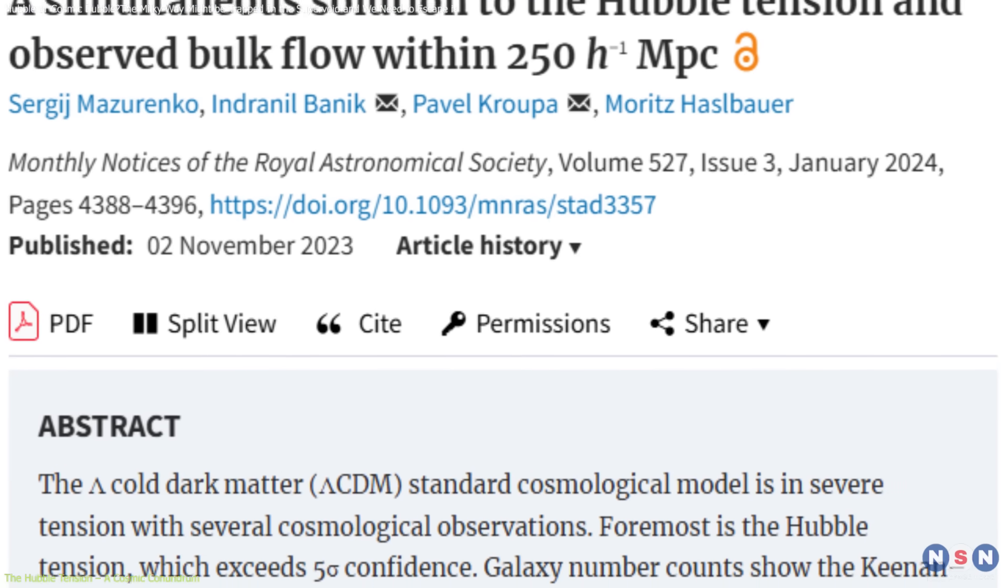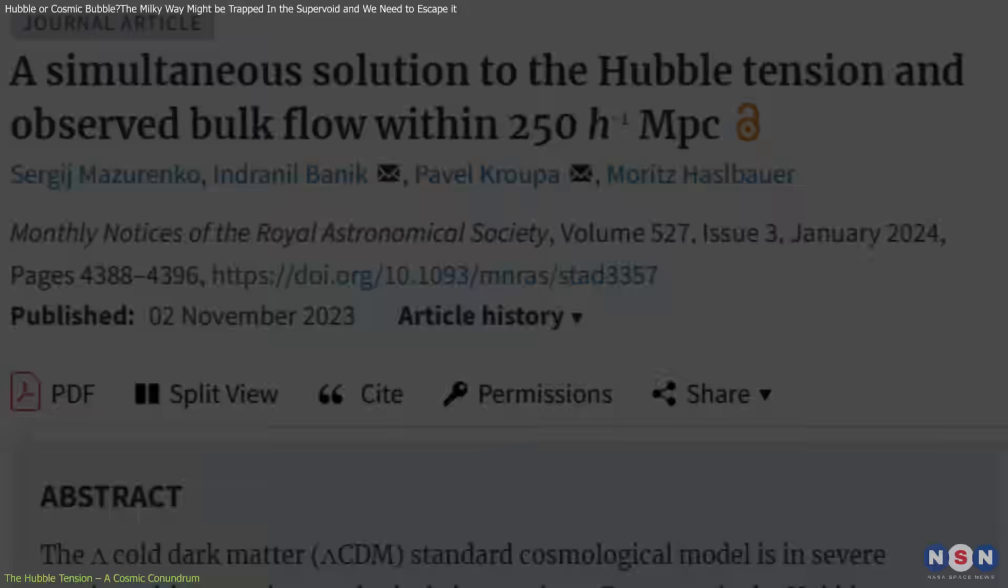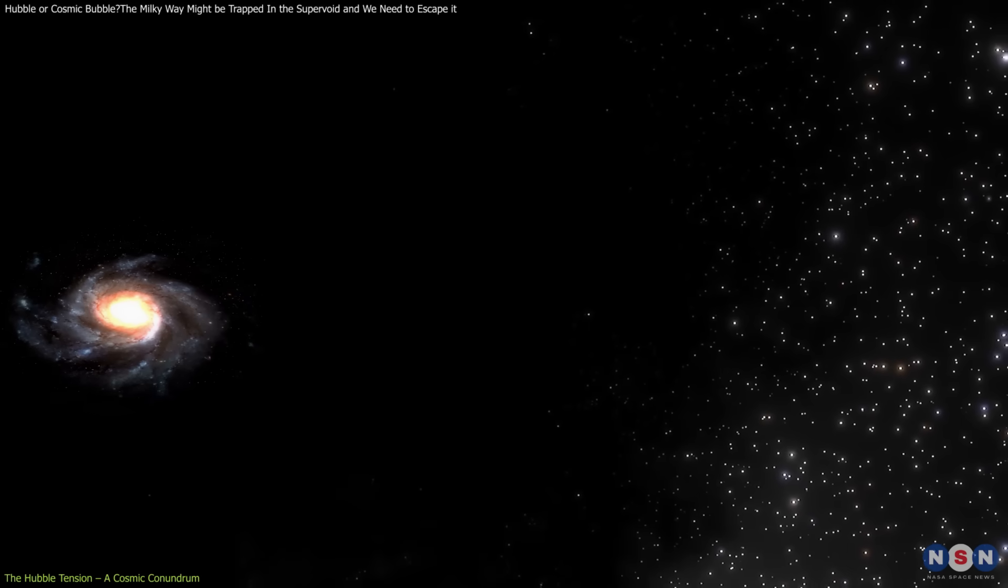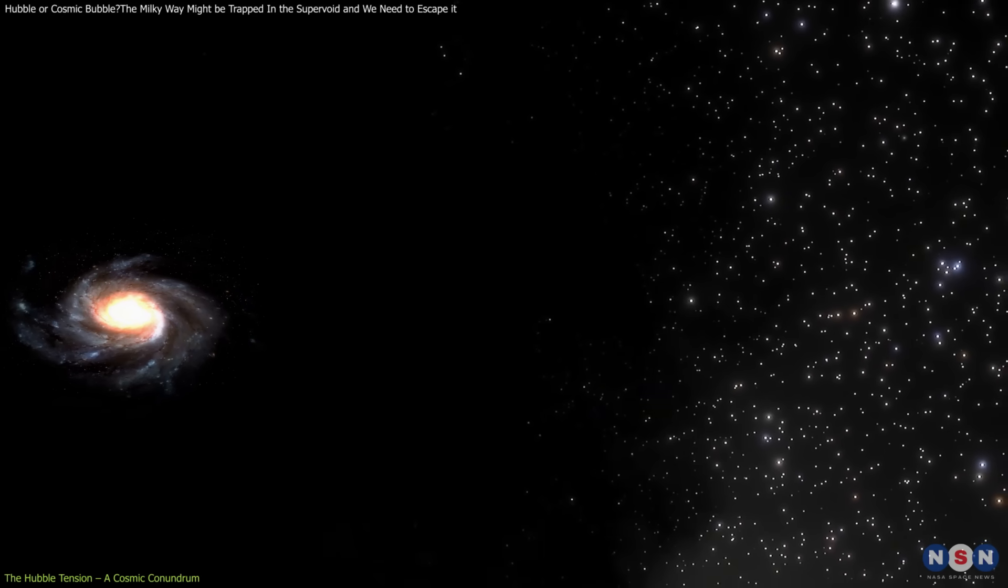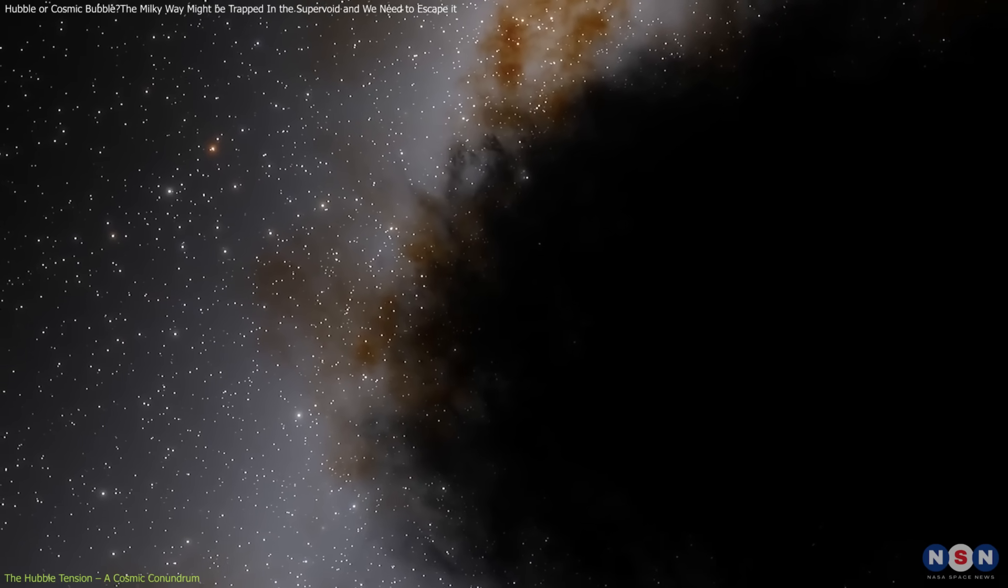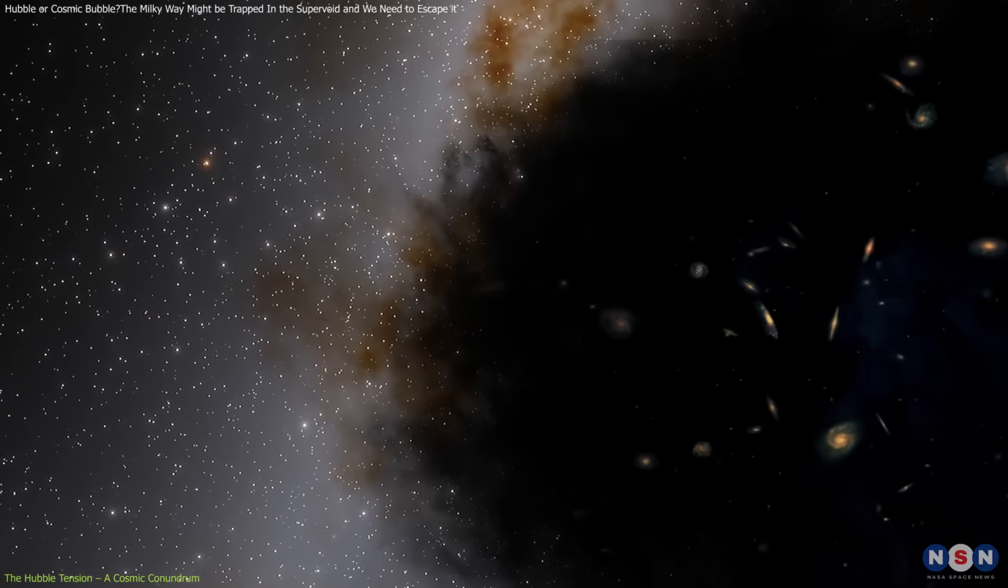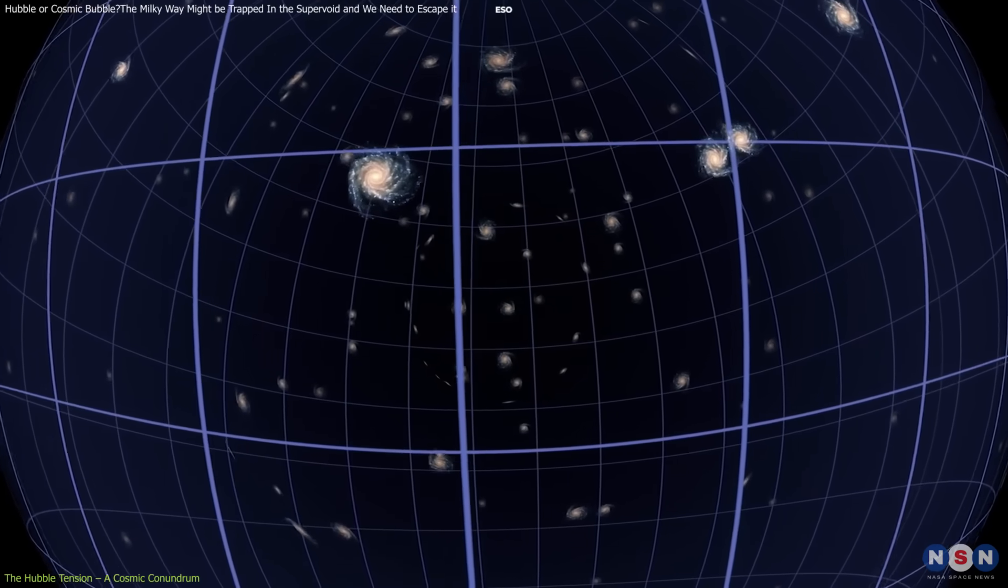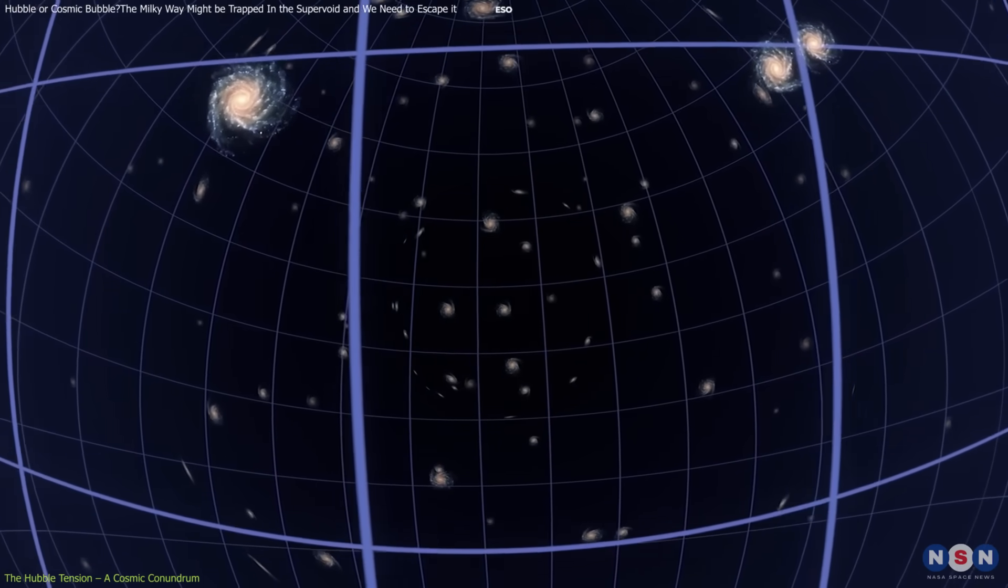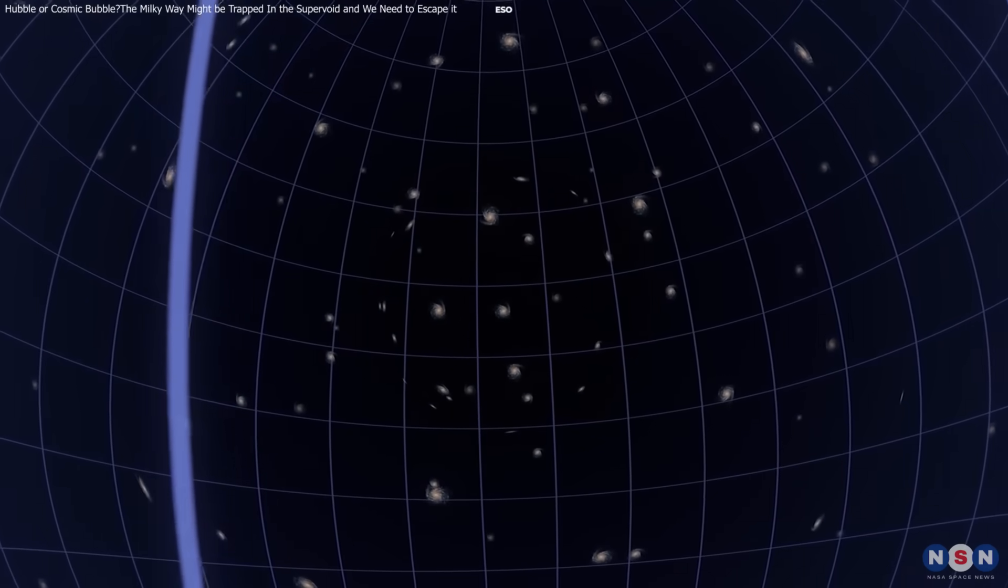Recent research points to a possible explanation. Our galaxy sits inside an underdense region of space called the KBC supervoid. Observations confined to this vast region could be biased, leading to the higher local measurements of the Hubble constant. This local bubble of accelerated expansion may offer the key to resolving the Hubble tension.